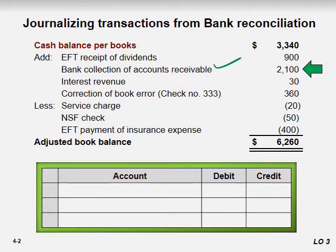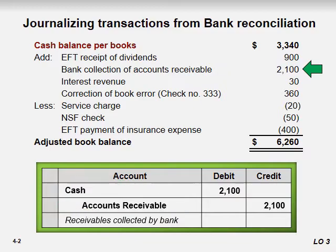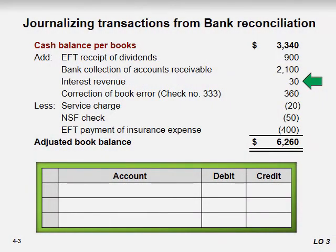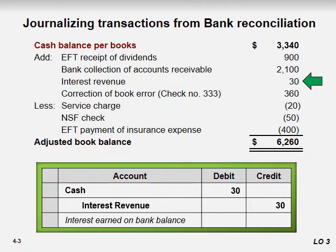Next, for bank collection of accounts receivable: when we collect the receivable, the entry would be Cash to Accounts Receivable, 2,100. Then for interest revenue we didn't record yet — pause the video and try to solve it. The entry is Cash to Interest Revenue, because revenue increases are credited and cash (an asset) increasing is debited.